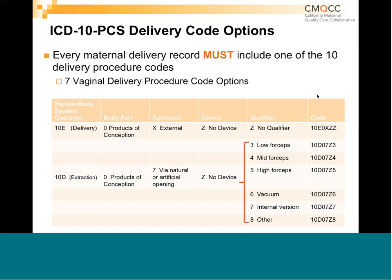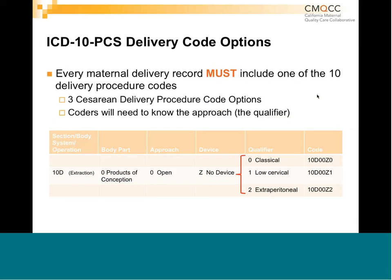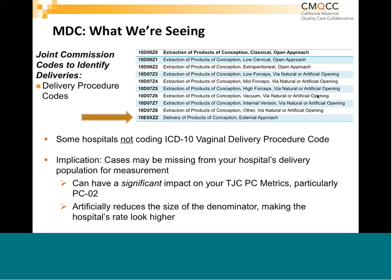There are three procedure codes for cesareans that are all pretty straightforward: classical, low cervical, extraperitoneal. They don't do any extra coding for J or T incisions on a C-section, which is a little unfortunate, but it's pretty simple and this part is pretty transferable. These are the codes that get you into the Joint Commission data sets to begin with. We had a problem with a number of our hospitals not coding vaginal delivery, and this can screw up your quality metrics if you don't have that.